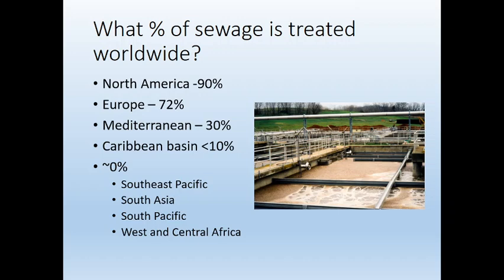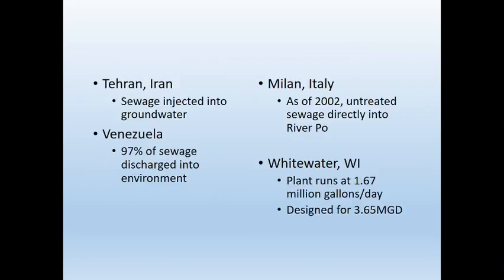That is a big problem, especially as populations are starting to get bigger basically all across the world. One interesting example is Tehran, Iran — the capital. Sewage is injected straight into the groundwater; they have pumps that push their sewage water underground. But then you might ask, where do they get their drinking water? Yes, it is groundwater. So that's a huge problem.